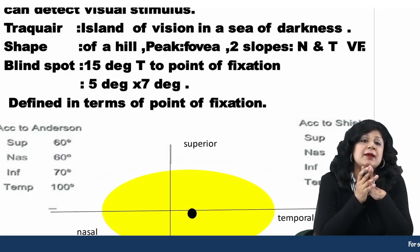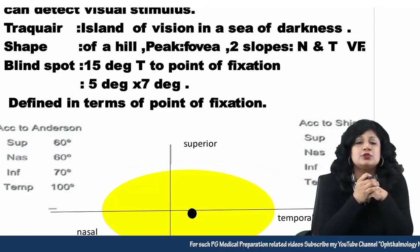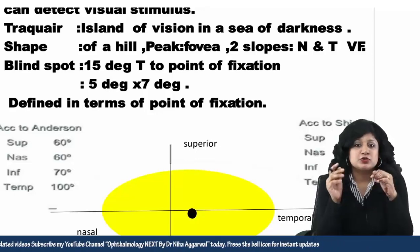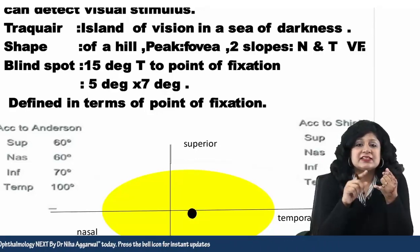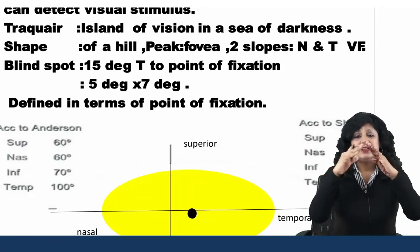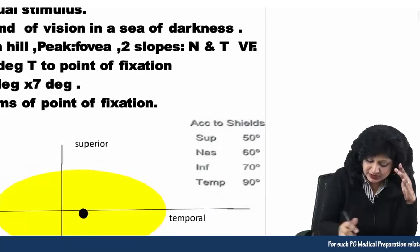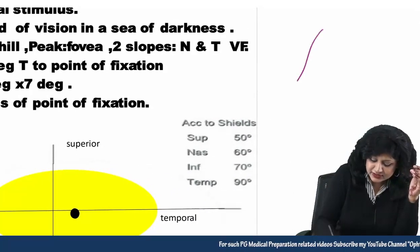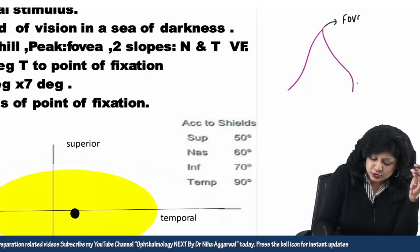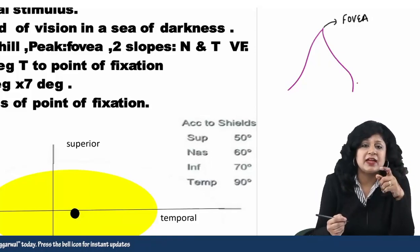When we represent the visual fields, we say it is actually the island of vision lying in the sea of darkness. As for the shape, it takes the shape of a hill. I'm going to show you — it takes the shape of a hill and we have got the peaks there. The first peak that you get is your fovea. So if this is your hill, the peak will correspond to the fovea and I will have two slopes.